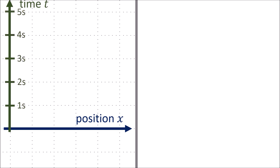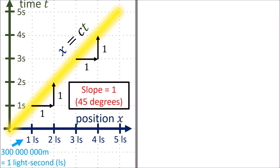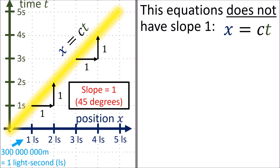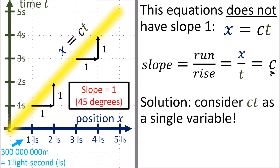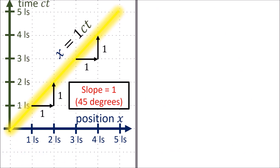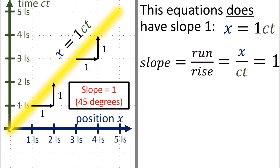We chose units of time and space so that a beam of light with equation x = ct has a slope of 1 and travels at 45 degrees. In special relativity, with time on the vertical axis, slope is calculated as run over rise — position over time — giving a slope of c. To make this slope equal 1, we treat ct as a single variable, giving a ct axis for time and x axis for position. The equation x = 1 × ct then has slope 1, since run over rise equals x over ct = 1.